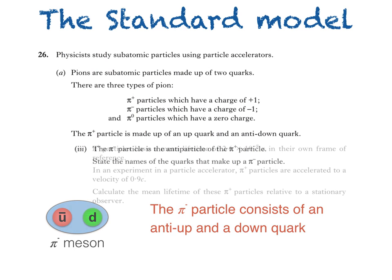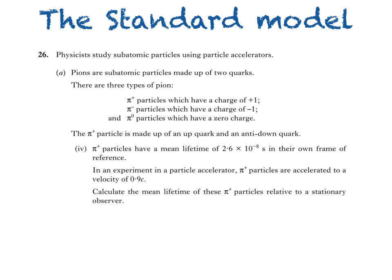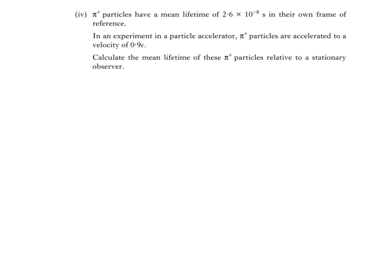Here's part four. Pi plus particles have a mean lifetime of 2.6 times 10 to the negative 8 seconds in their own frame of reference. In an experiment in a particle accelerator, pi plus particles are accelerated to a velocity of 0.9c. That's 0.9 times the speed of light. Calculate the mean lifetime of these pi plus particles relative to a stationary observer.